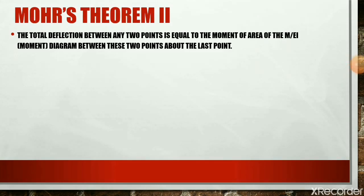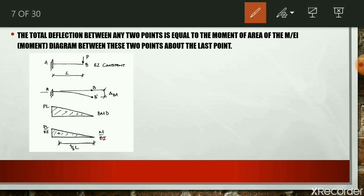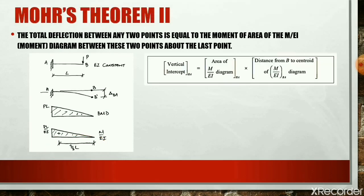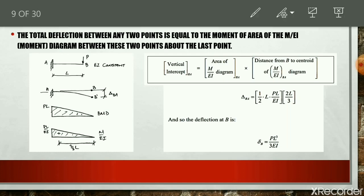Considering the same cantilever beam AB used for Mohr's Theorem 1, we need the area and the centroidal distance of the triangular M/EI diagram. For a triangle, the centroid is located at 2/3 × L from the free end B. So the centroidal distance X̄ = 2L/3. The deflection delta_BA equals area of the M/EI diagram multiplied by centroidal distance: ½ × L × (PL/EI) × (2L/3), which gives delta_B = PL³/3EI.